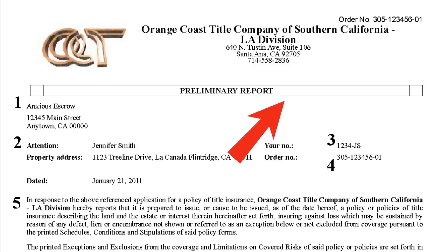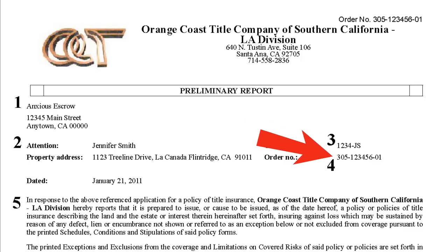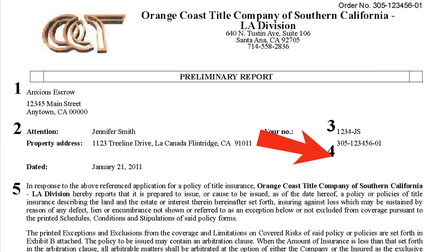Item number three is our customer's reference number — this is the actual escrow number that they've assigned to this particular transaction. Item number four is our title order number; in this case it's order number 305-123456-01. Anytime you have questions or concerns, you can reference that number and it'll direct you into our internal system to identify exactly which order is being called about.